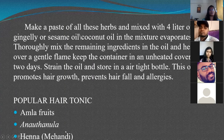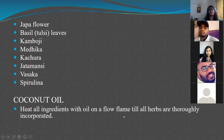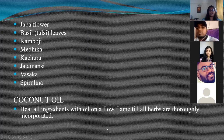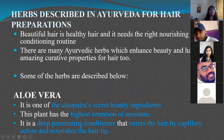Another popular hair tonic consists of Amla, Anantmula, and Henna or Mehendi, along with Tulsi leaves, Jadaman, Sivasaka, and Spirulina. These ingredients are mixed together and heated with oil on a low flame until all herbs are thoroughly incorporated, then strained and stored in airtight containers. Spirulina is a blue-green algae rich in protein, also used in hair preparations.